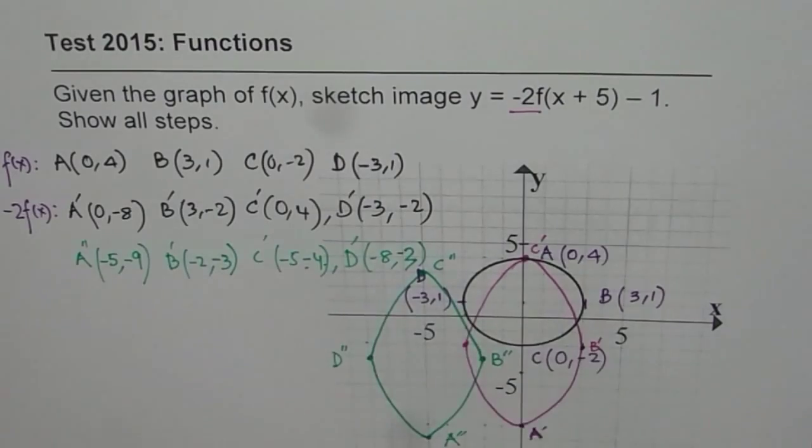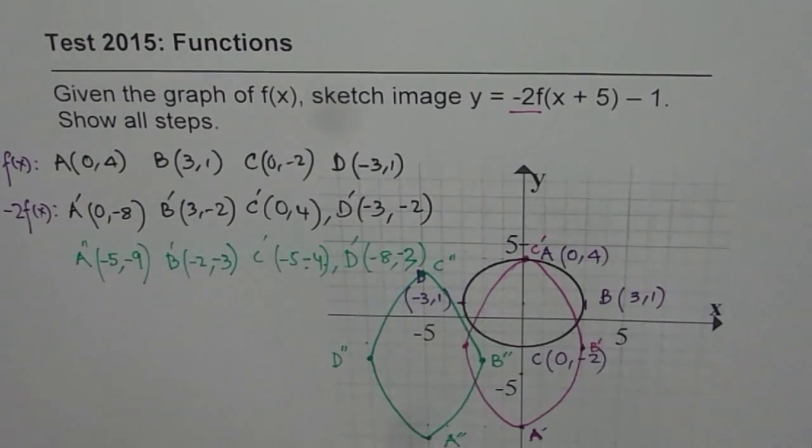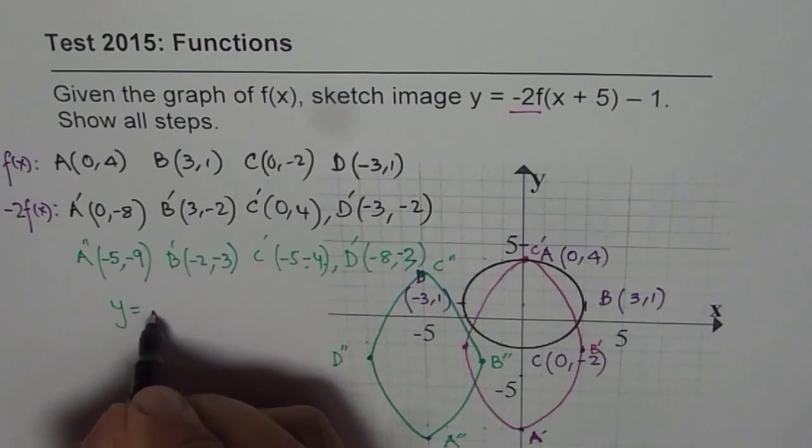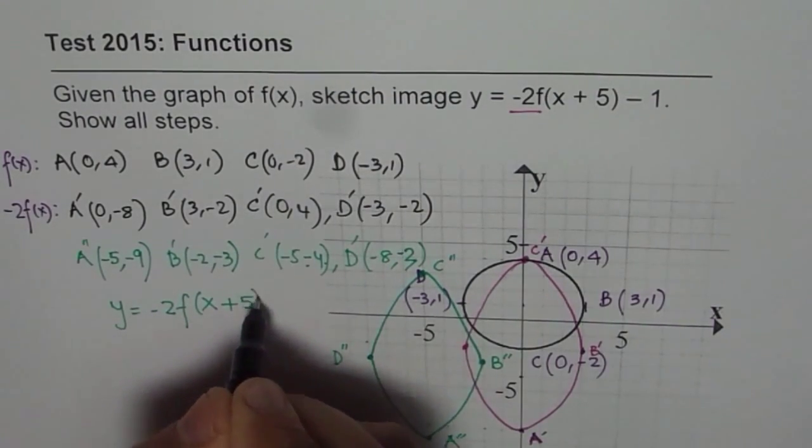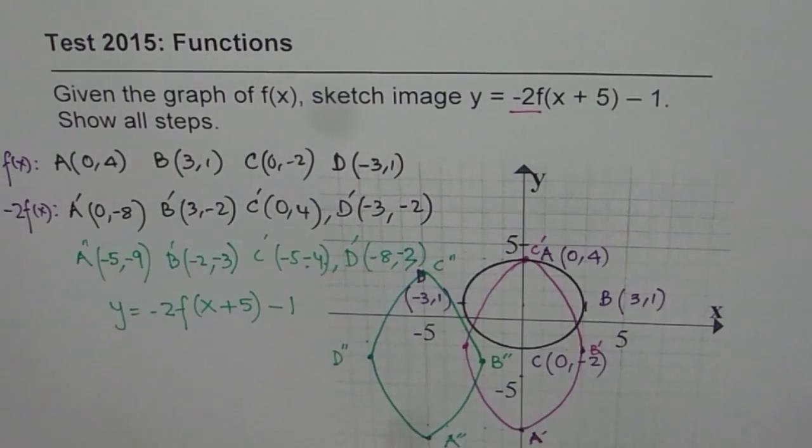So that is how we get a final transformed function, which is Y equals to minus 2f of X plus 5 minus 1. So that's the way to do it.